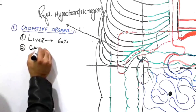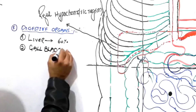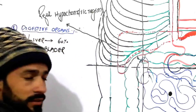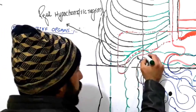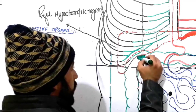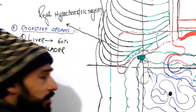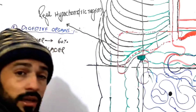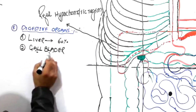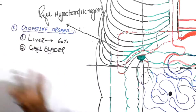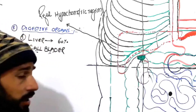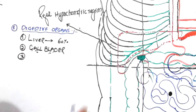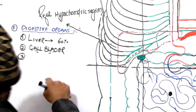The second digestive organ is the gallbladder. On the posterior or visceral surface of the liver, you will find the gallbladder. The lowermost part of it is visible here; other parts are present posterior to the liver. The gallbladder is present in the right hypochondric region and plays a role in digestion of food.